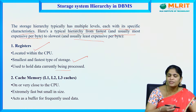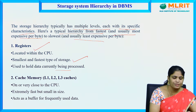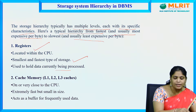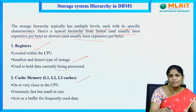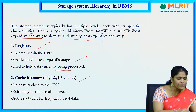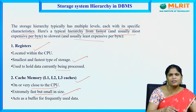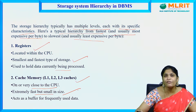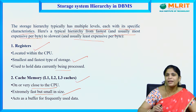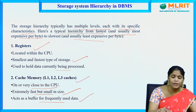Whatever data is being processed is held in specific registers, which are inbuilt in the CPU. Next is cache memory. Here we have levels L1, L2, L3 caches, which are very close to the CPU — extremely fast but small in size. The storage capacity is very little. Cache acts as a buffer for frequently used data.